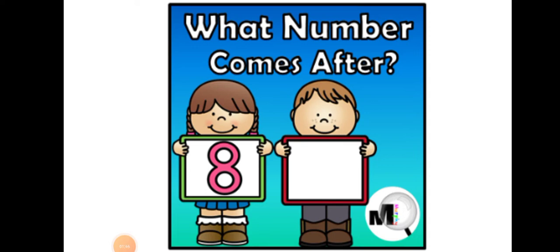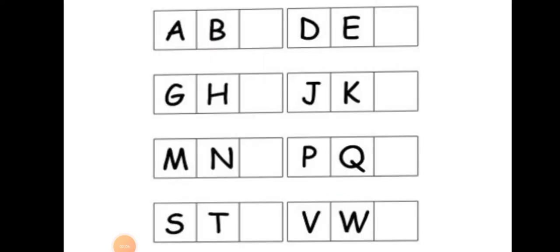Like when madam asks what comes after A, so you give answer that B comes. Madam will first explain using the English alphabet so your concept is very clear. Now give answers to madam. What comes after B? C, excellent. What comes after E? F, excellent.